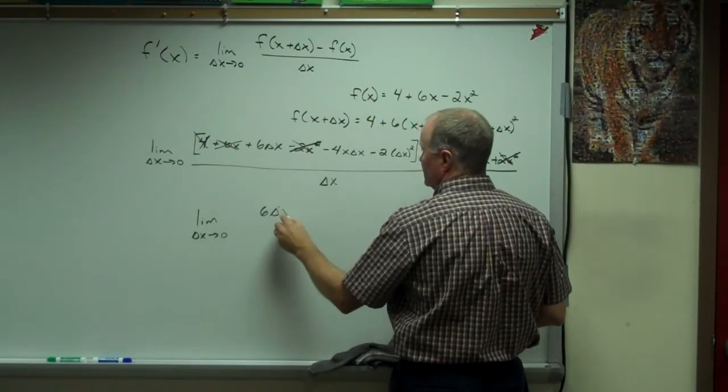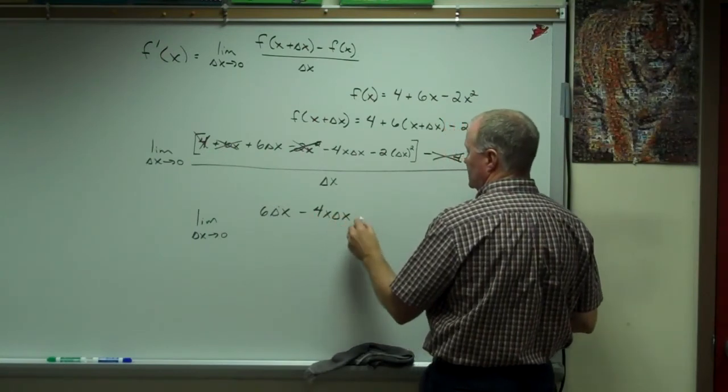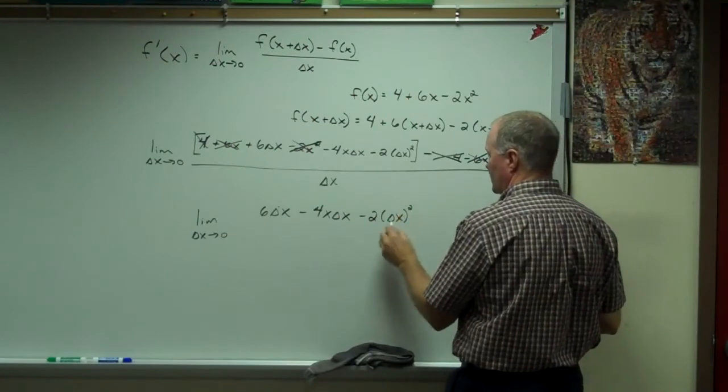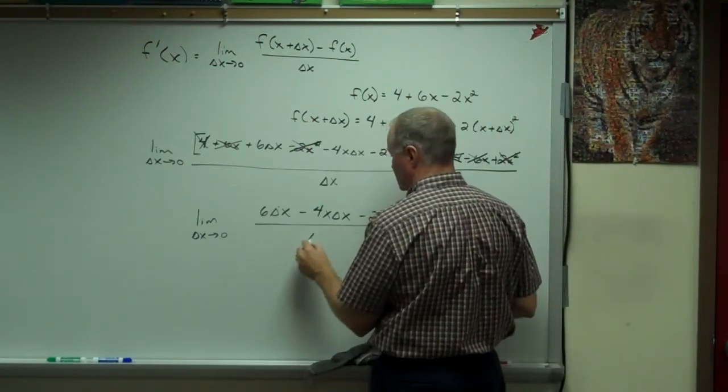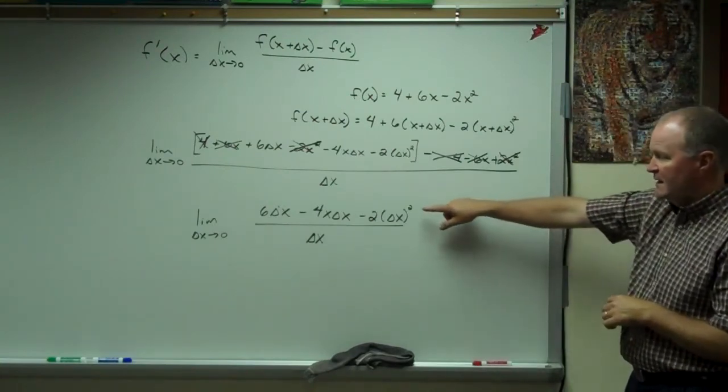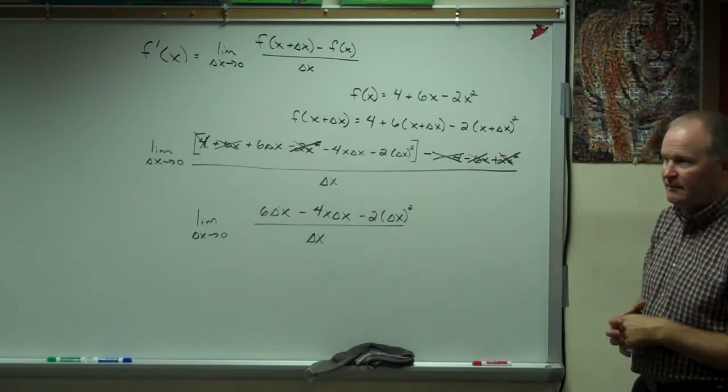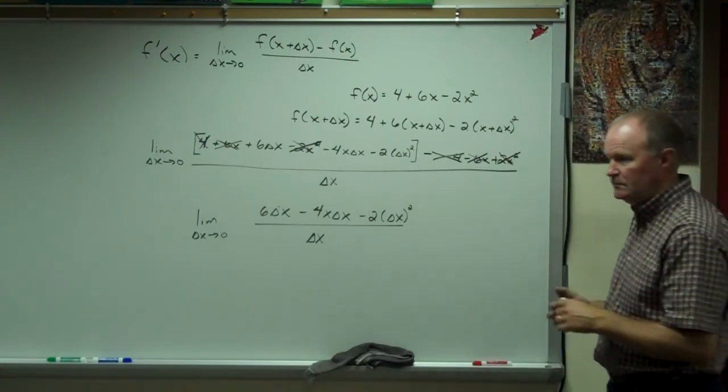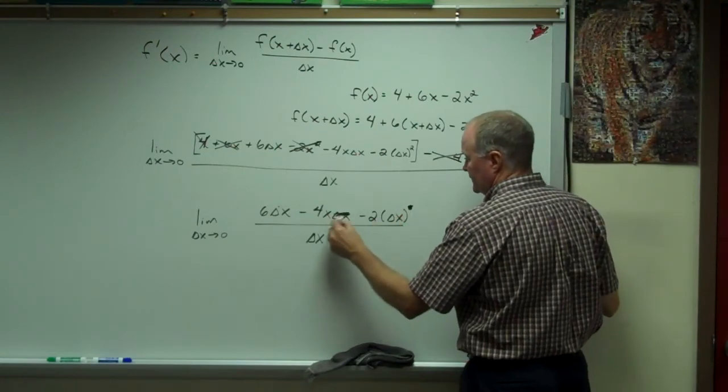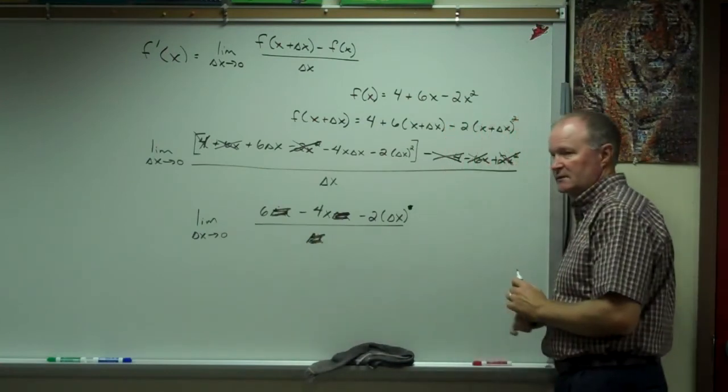And what do I have left? Six delta x's, 4x delta x, and 2 delta x squared all over delta x. And if you see, everybody on top has got a delta x in common. So I can get rid of that delta x, that delta x, that delta x, and that delta x.